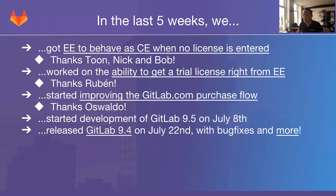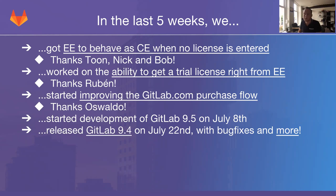The second thing that Ruben has been working on is the ability to get a trial license right from Enterprise Edition. There is now an interface inside GitLab EE which allows you to immediately purchase a trial license without having to manually go to the customer app, wait for an email, and manually enter it into GitLab. This process has been streamlined a lot, making it easier for people to try out Enterprise Edition and migrate to it.